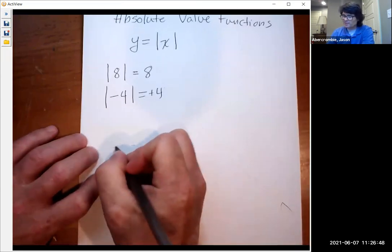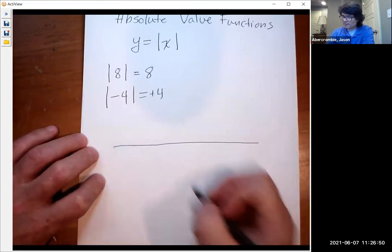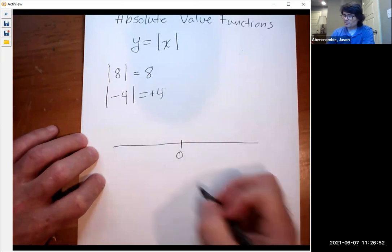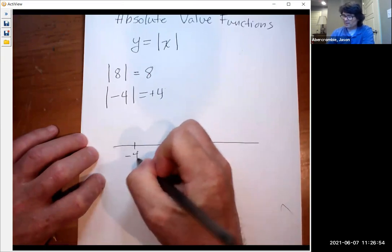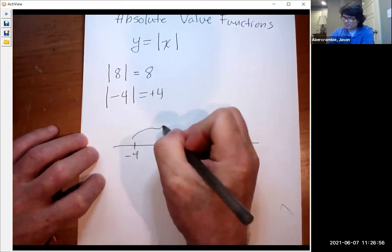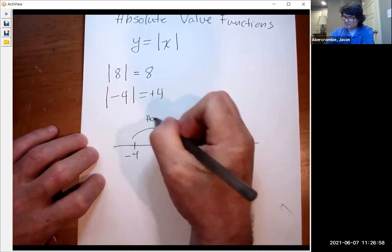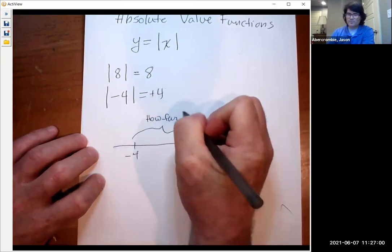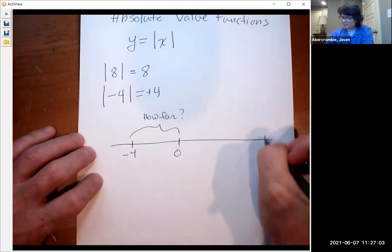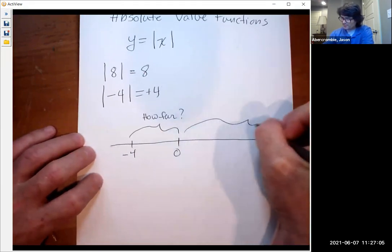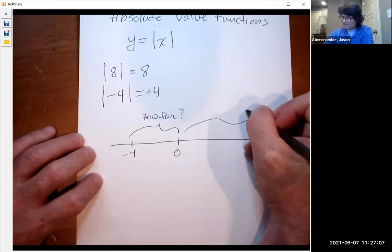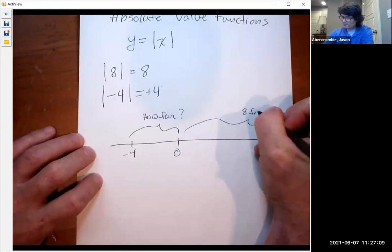But what we're really doing is we're answering this question. If you have a number line and you put in negative four on that number line, how far is this from zero? If you have eight over here, how far is eight?